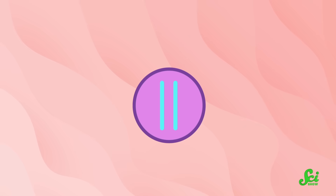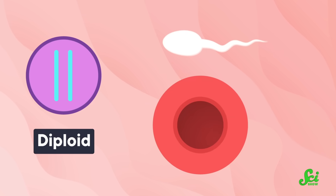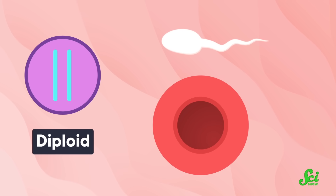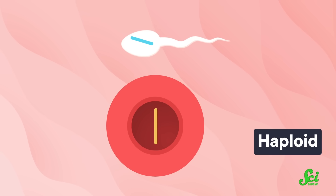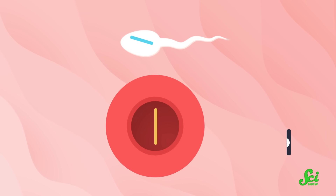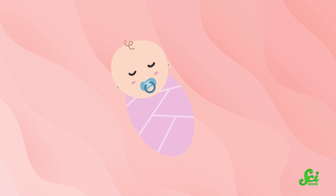To talk about plants, it might be helpful to do a quick reminder about how animals work. Animals have two copies of their genome in each cell, which makes them diploid. During reproduction, animals make sperm and egg cells, which each only have one set of chromosomes, making them haploid. These individual cells never really grow on their own, but they do combine to form a diploid cell again during fertilization, which then grows into a new animal.